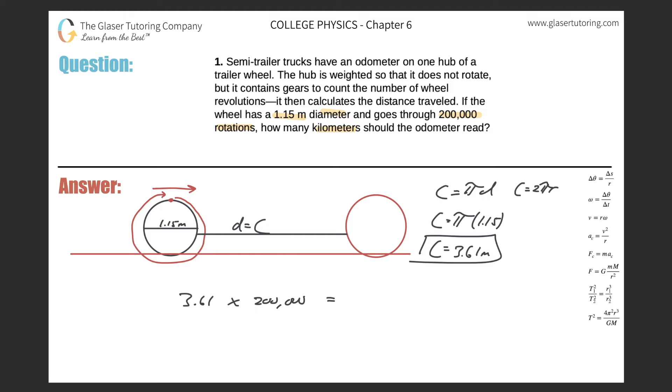Remember, the units here work out this way: it's 3.61 meters per one revolution, and then it's 200,000 revolutions, so they cancel and we're left with meters. That kind of makes intuitive sense.